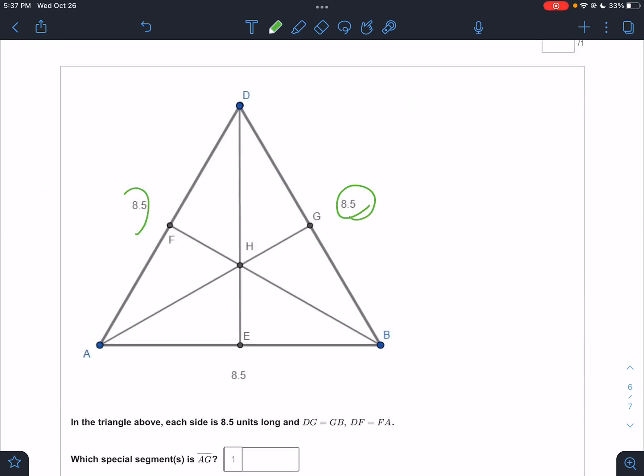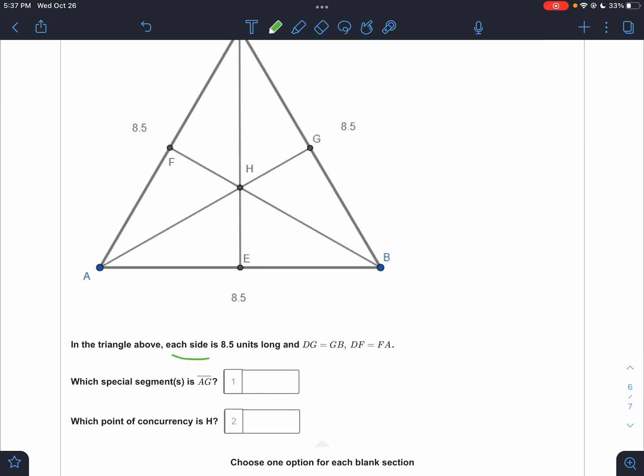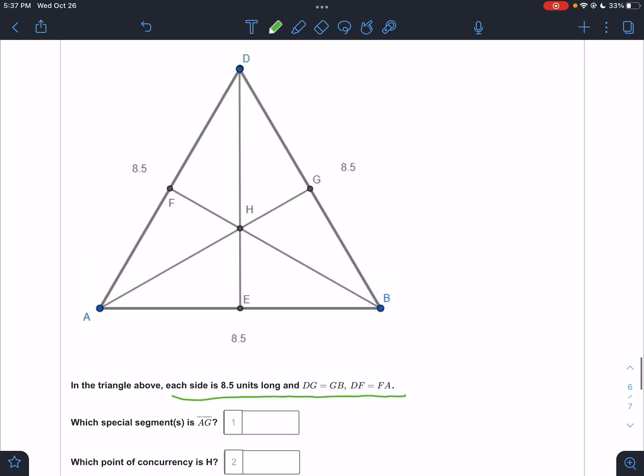8.5, 8.5, 8.5. This is an equilateral triangle. So we know we're talking about an equilateral triangle. In the triangle above, each side is 8.5, and they tell you DG is congruent to GB. So that means this is a median, and if that's a median, then it's everything. Did you hear me? If it's an equilateral triangle, and you know it's one of the special segments, it's all four. That means it's also an altitude. It's also an angle bisector. It's all the things.